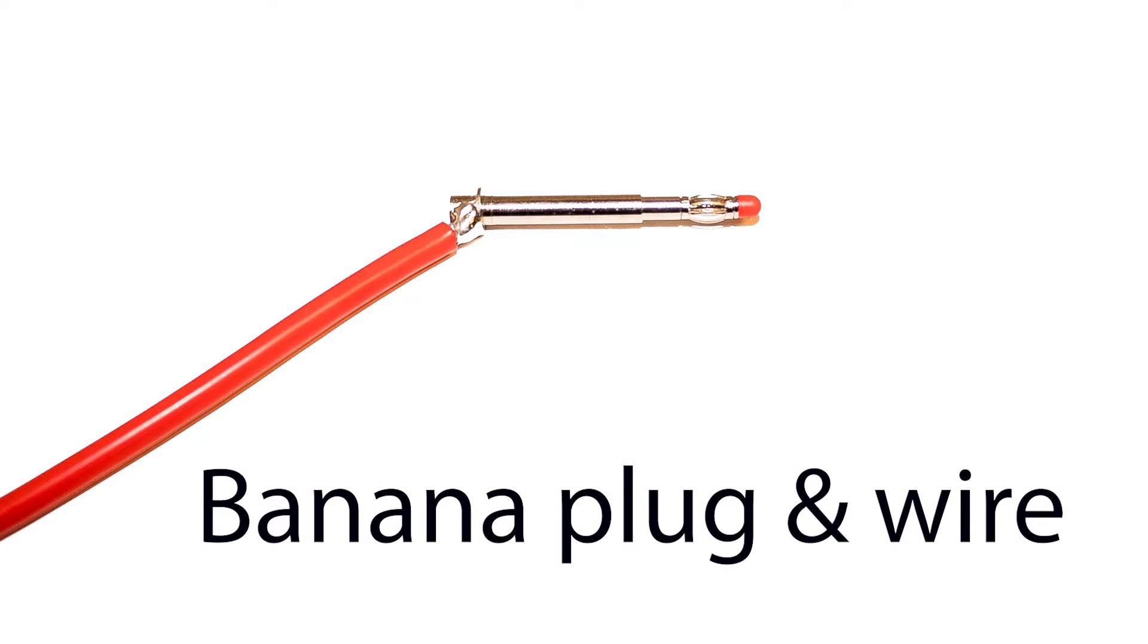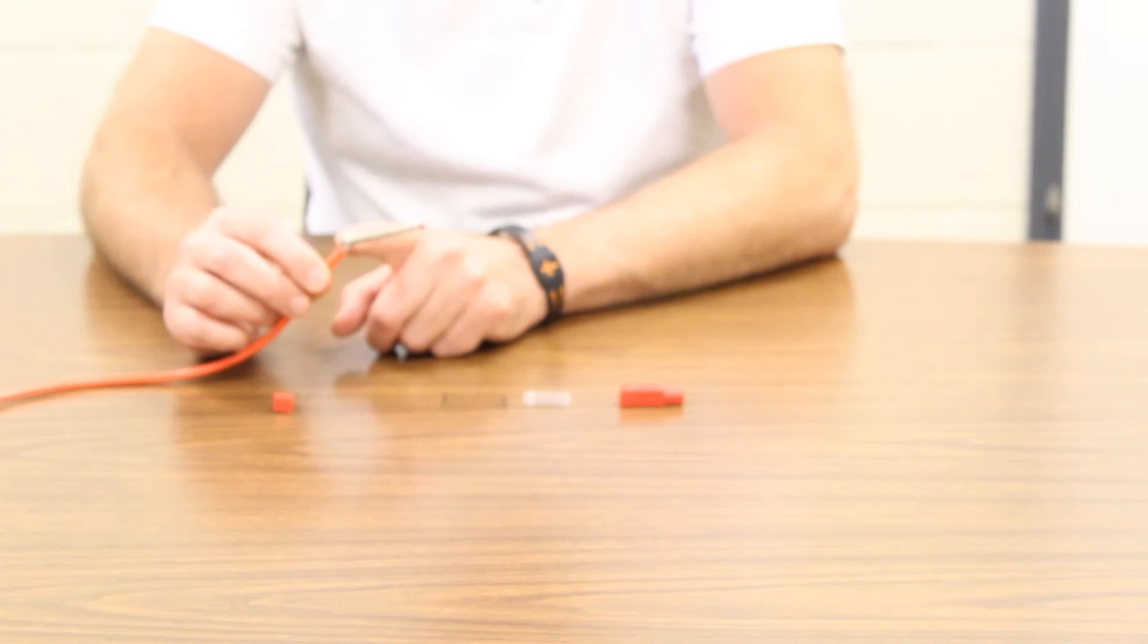First, you need to cut the wire an eighth of an inch. For simplicity, I've already done the solder of the wire. Install at a 45 degree angle.